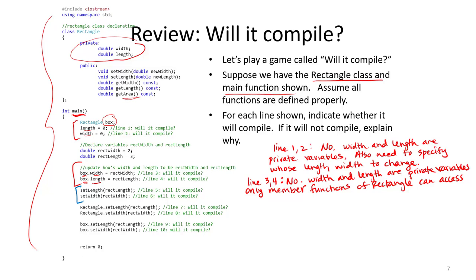Lines 5 and 6 won't compile either. Here we're actually calling setLength and setWidth, which are functions that can access width and length. However, we still need to use the dot operator to specify which object to call setLength and setWidth on.